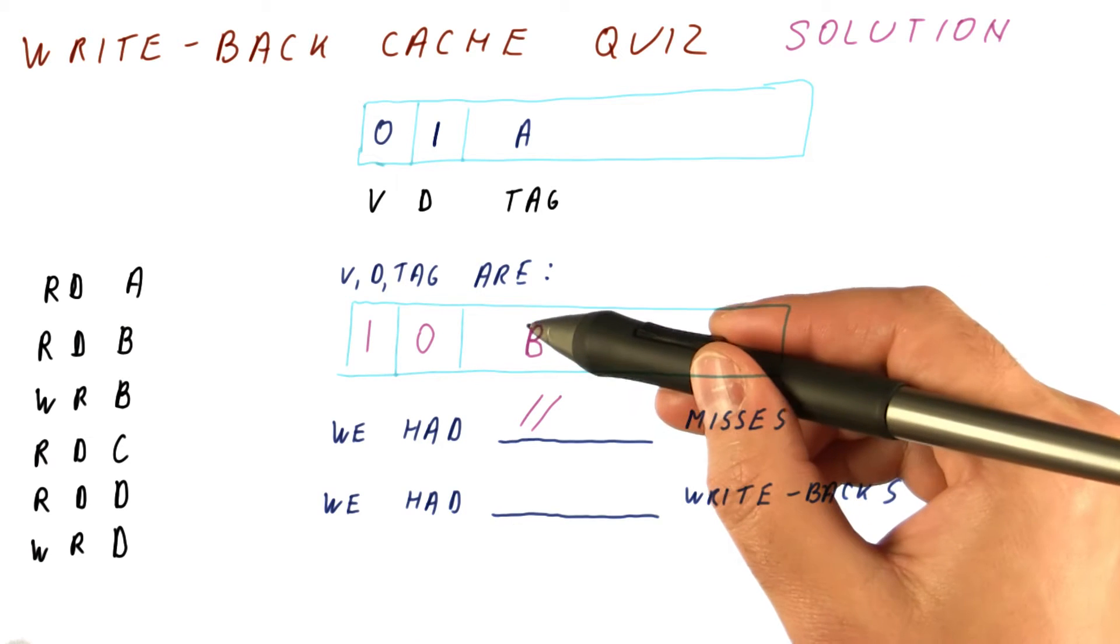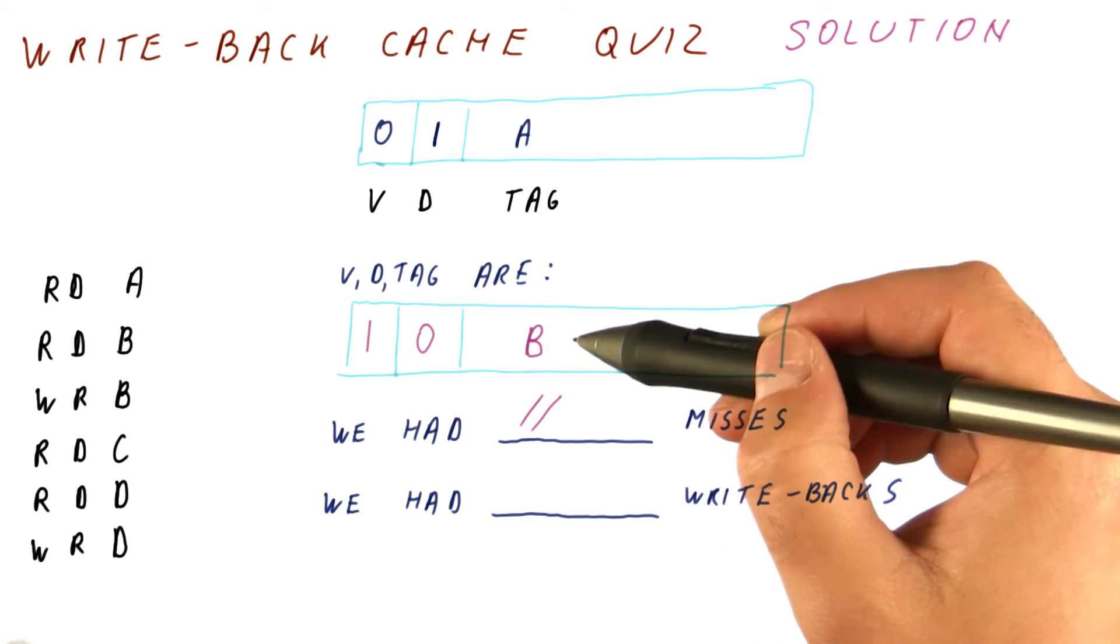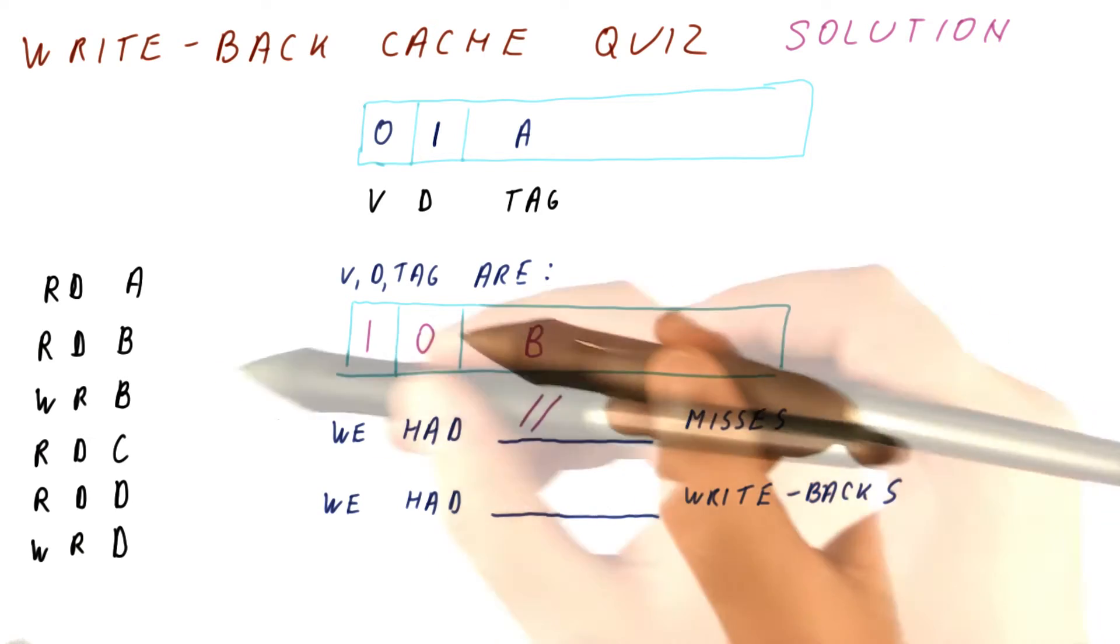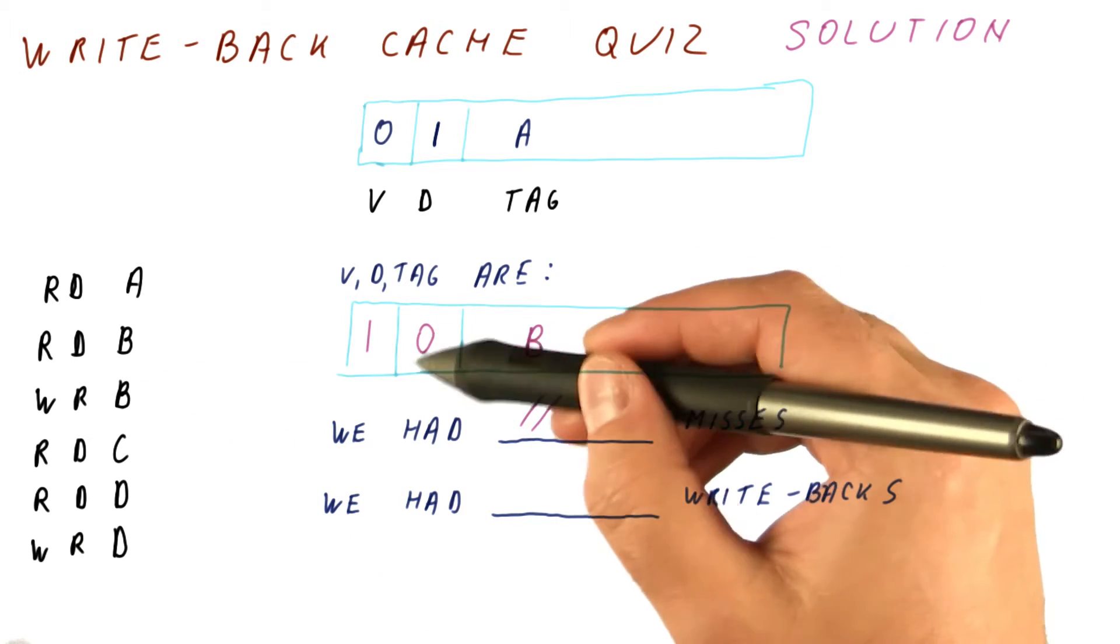Next, we have a write to B. We check the tag and the valid bit. This is a hit. Because this is a write, we set the dirty bit.